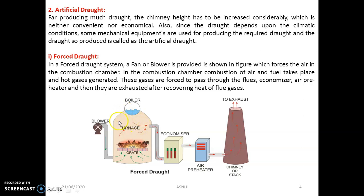In case of forced draft, there is a boiler furnace where combustion of fuel takes place in the grate area and a tremendous amount of flue gases are produced. The main function of the blower is to forcefully create motion of the flue gases, moving them in the forward direction. They pass over the economizer, superheater, and air pre-heater, and finally move out to the atmosphere through the chimney.